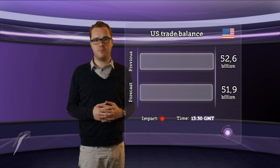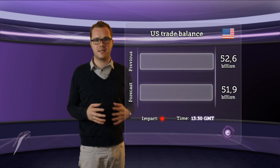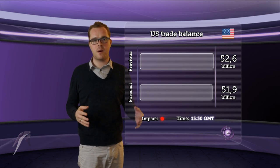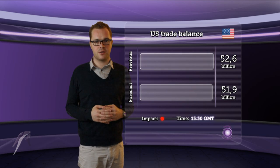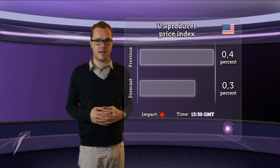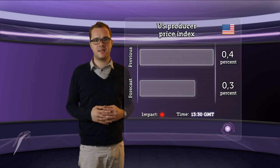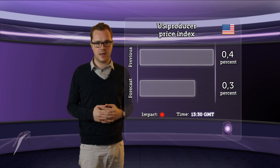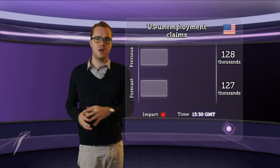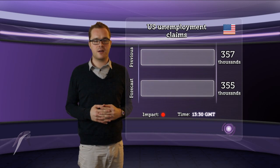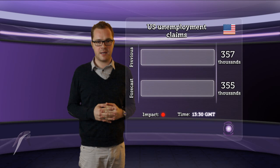At 1:30pm GMT, the Bureau of Economic Analysis in the US will release statistics about trade balance. Economists await a decline in deficit from 52.6 billion to 51.9 billion, and a high impact on the dollar can be expected. The Department of Labor in the US will publish data about the producer price index at 1:30pm GMT. PPI is expected to rise 0.3% compared to a previous rise of 0.4%, with high impact on the dollar. US employment claims will also be released at 1:30pm GMT, with an expected decline in jobless claims from 357,000 to 355,000, and high impact on the dollar can be expected.